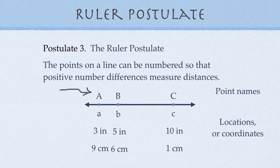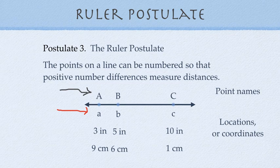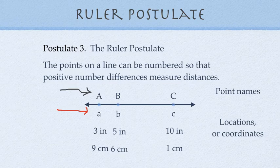These numbers down below are what we call locations or coordinates. So, we can say point A, with a capital letter, is at a location A. Point B is at location B. And point C is at location C. So, the point is the uppercase letter and the locations are the lowercase letter.